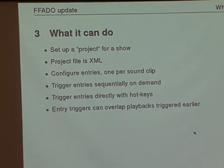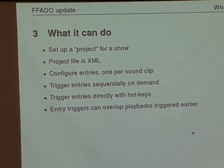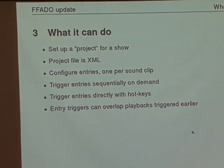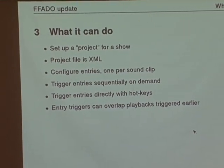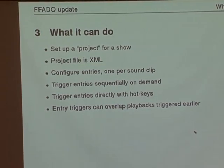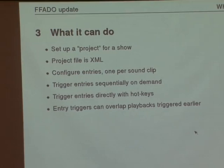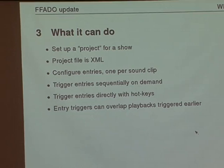You have one entry per clip, so if you want a particular gunshot five times throughout, you sequence it in order. You can also assign individual hotkeys to particular sound effects. Sometimes in theatre you've got to visually trigger cues — you might have five cues and trigger them in the order the action happens on stage, which you can't always predict. You can also fire a sound effect while another is already going and it will mix them, so you don't have to wait for one to end before the next starts.